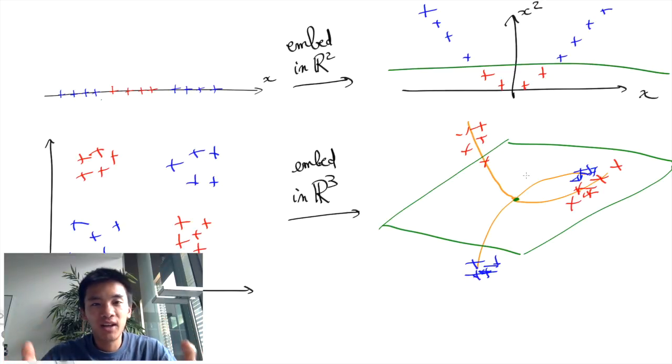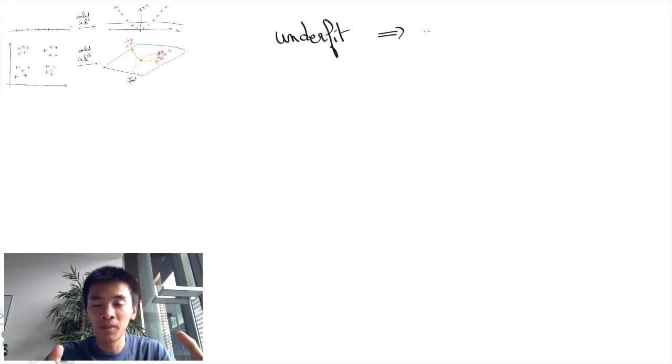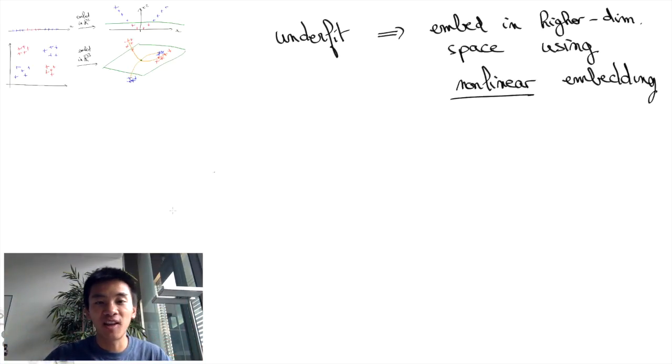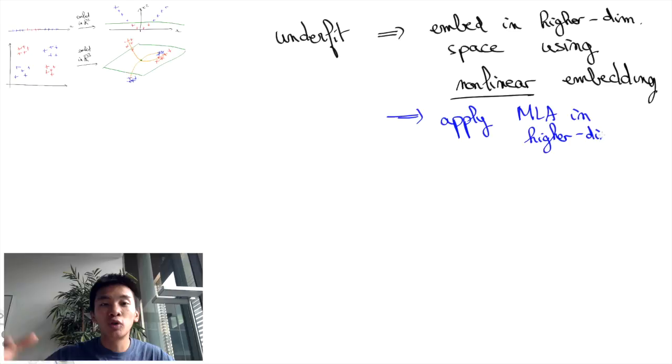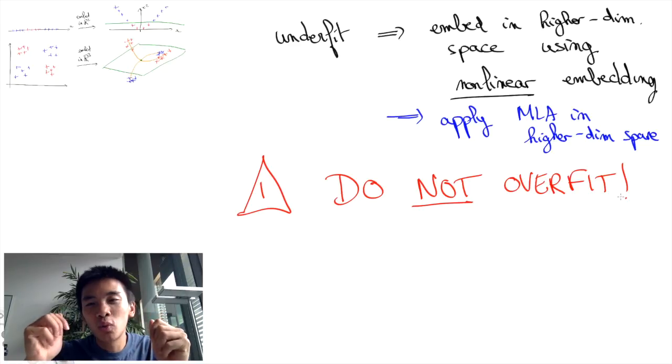In practice, if you applied your basic machine learning algorithm to some data and it failed because it underfitted the data, it can be a good idea to create new features from known features using non-linear transformations and to then apply your off-the-shelf machine learning algorithms to these higher dimensional new features. Be careful though not to add too many new features - you do not want to overfit your training set.